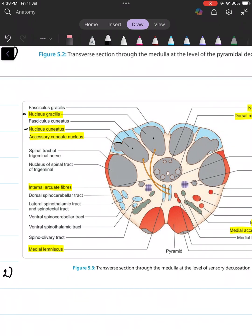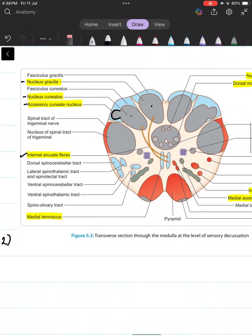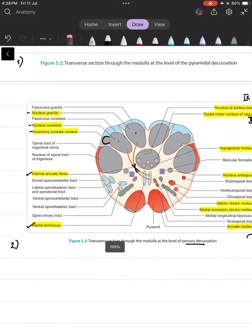Cuneate nucleus has an additional projection called the accessory cuneate nucleus. Now these nuclei give rise to what we call the internal arcuate fibers. Again they are arched so arcuate, which cross over hence the name sensory decussation, and they continue upwards as the medial lemniscus.